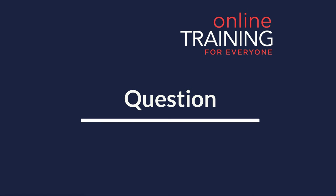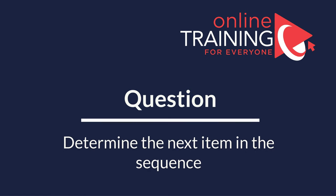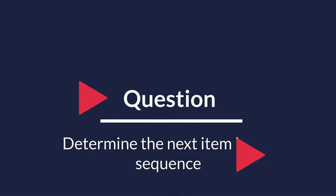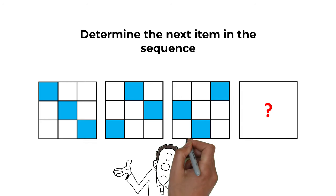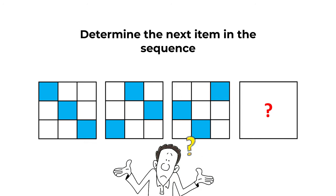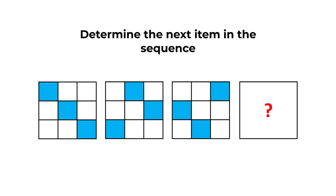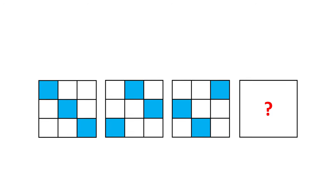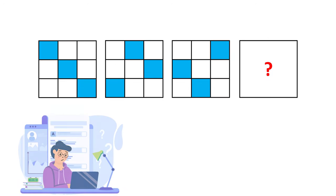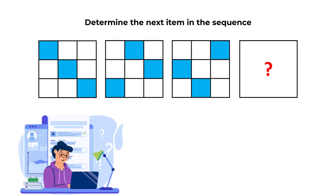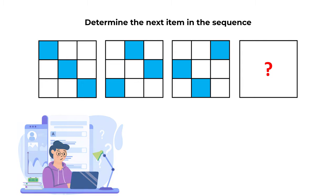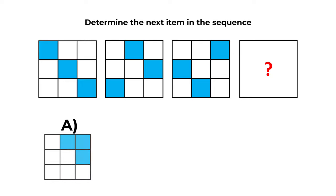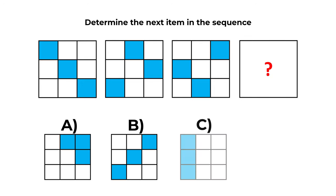Here is a very interesting problem that you might frequently get on the test. You need to determine the next item in the sequence. You're presented with a sequence of large squares. Each large square contains nine small squares inside, and the small squares are of different colors. You need to determine the next item in the sequence, and you have four different choices: A, B, C, and D.